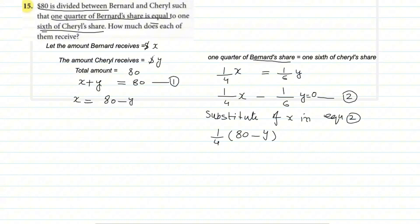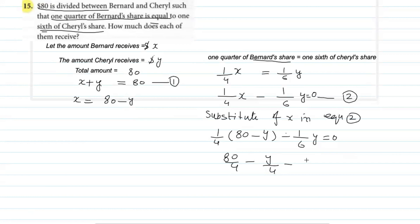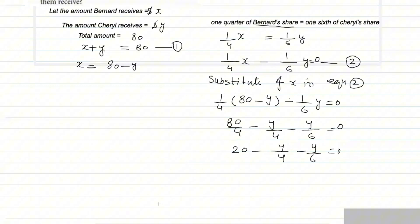Substituting value of x in equation two: in place of x write (80 − y), so (1/4)(80 − y) − (1/6)y = 0. This gives 80/4 − y/4 − y/6 = 0. Since 80 over 4 equals 20, we get: 20 − y/4 − y/6 = 0.